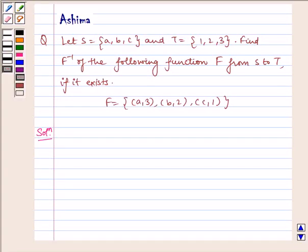Hello and welcome to the session. Let us understand the following problem today. Let S = {a, b, c} and T = {1, 2, 3}. Find f inverse of the following function f from S to T if it exists. f = {(a,3), (b,2), (c,1)}.